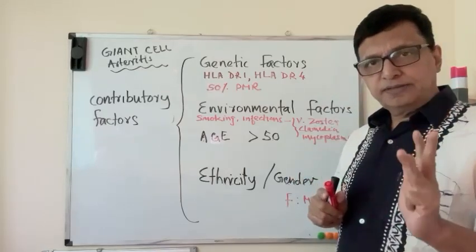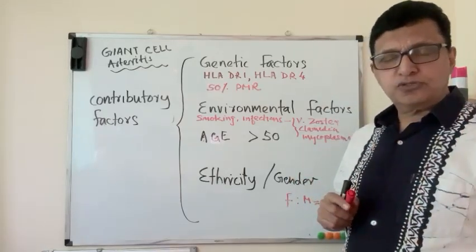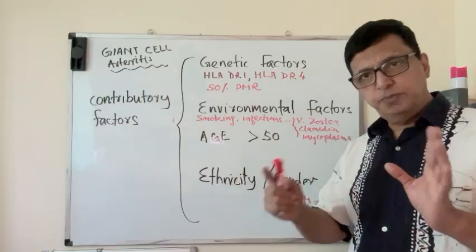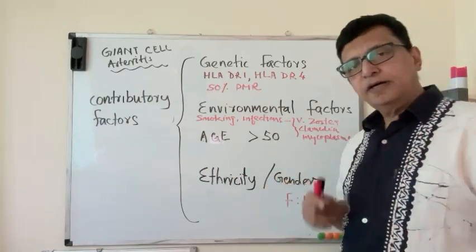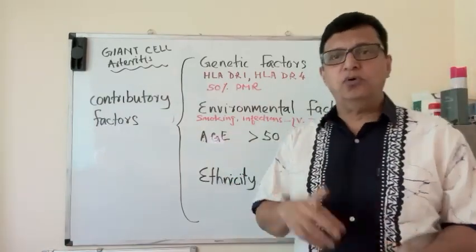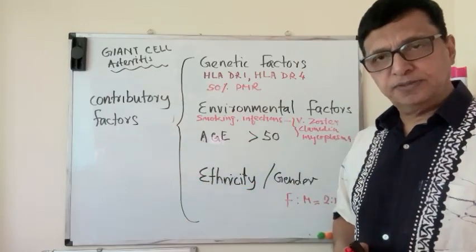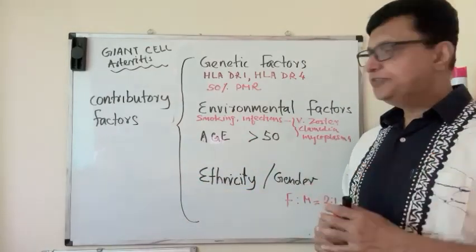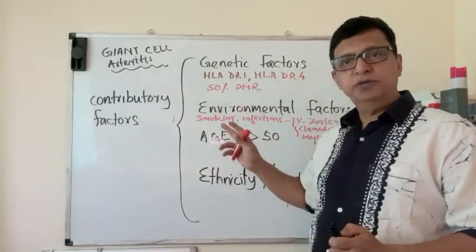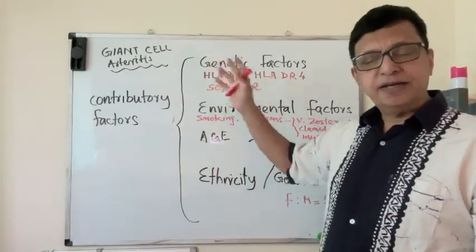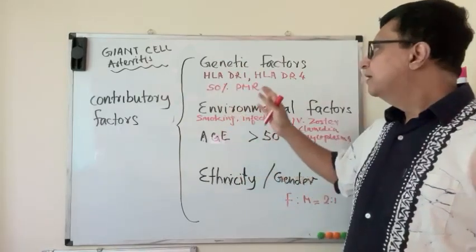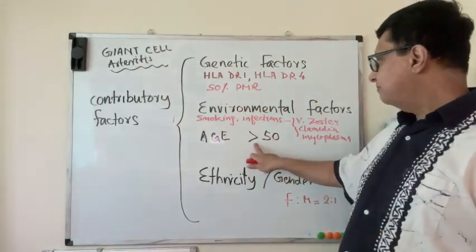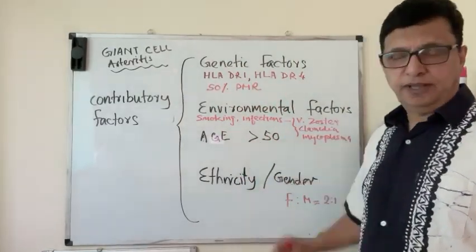One is Giant Cell Arteritis, the other is Takayasu Arteritis. The difference between these two are: Takayasu Arteritis is more common in the Asian population and starts at a younger age. Giant Cell Arteritis is more common in the European population and Scandinavian patients, and it starts somewhere above 50 years of age.